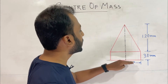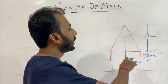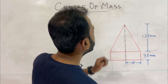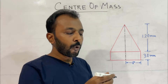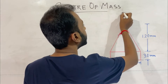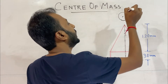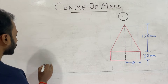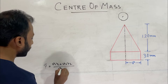The bottom face is taken as the reference plane, and the center of mass lies along the axis of symmetry above this base. The formula to calculate y-bar is: y̅ = (V1·y1 + V2·y2) / (V1 + V2).